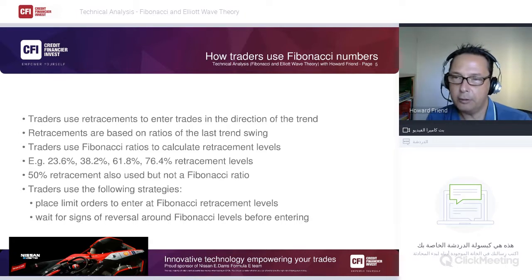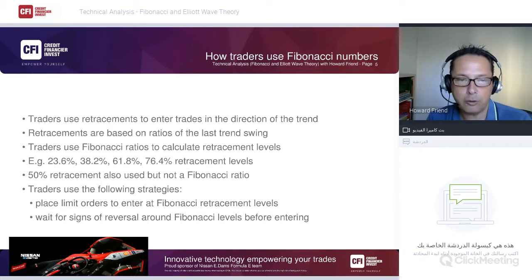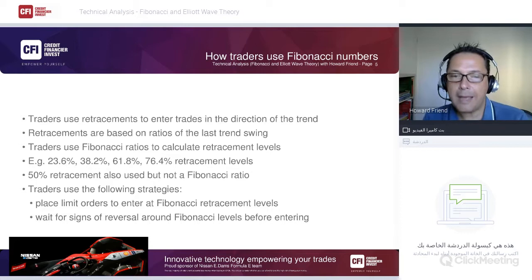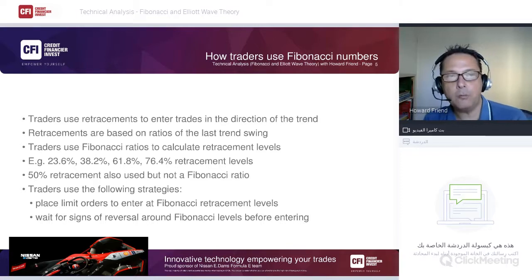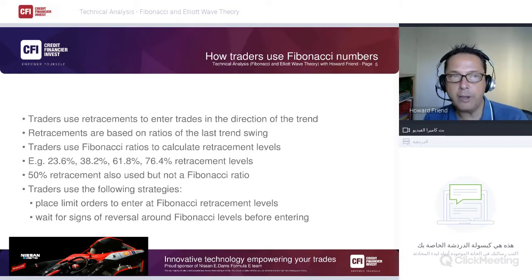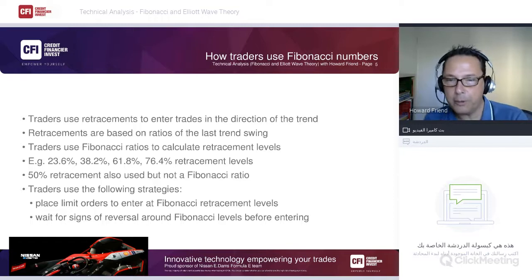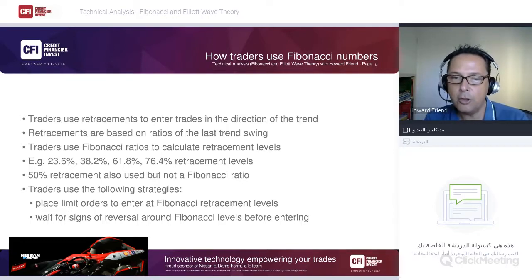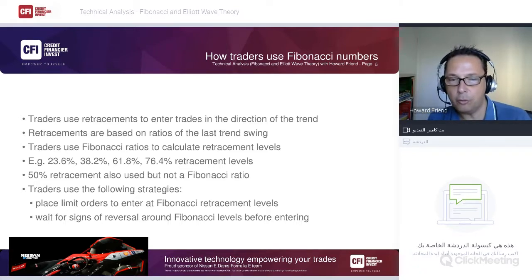You'll have the 23.6, 38.2, 50, 61.8, and 76.4 retracement levels displayed. Two strategies: you could place buy limit orders at each of these levels, or wait for the pullback into the Fibonacci zone and then look for signs of renewed demand before entering a trade in the direction of the swing.